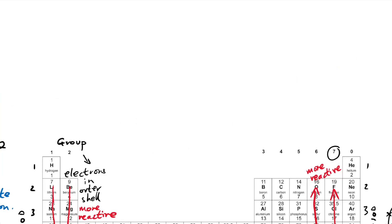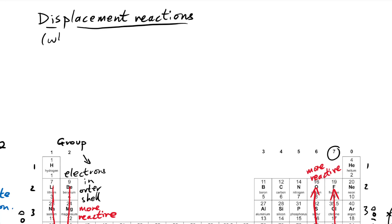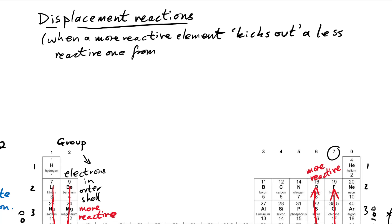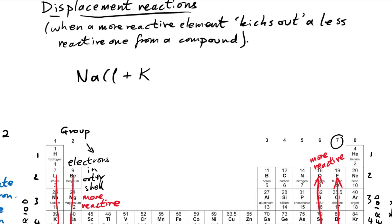So what does this mean for us? Well, it means that we can have displacement reactions - that is, when a more reactive element kicks out a less reactive one from a compound. So let's say we have sodium chloride. What happens if we react it with potassium? Well, potassium is further down group one so it's more reactive. It's going to kick out the sodium - it comes along and says that chlorine is mine. The chlorine basically goes: it's much easier to get the electron from potassium instead - and so it jumps ship. Therefore it turns into potassium chloride and sodium is left out.